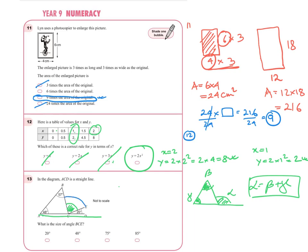Using the exterior angle theorem here, the full exterior angle equals 57 plus 48, which gives 105 degrees. But that's the full blue angle — we only need the smaller green portion. So we take away 20 degrees: 105 minus 20 equals 85 degrees. The angle BCE is 85 degrees, and we can see that 85 is the correct answer.